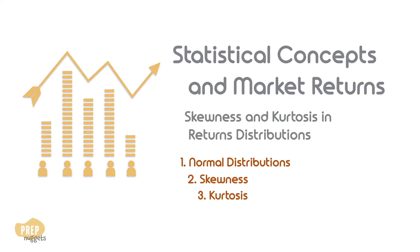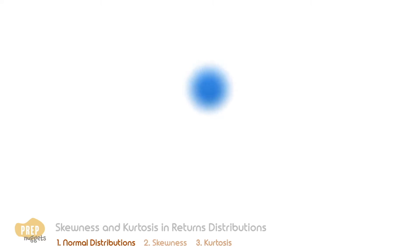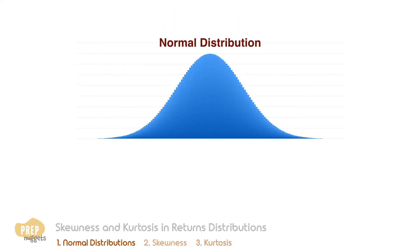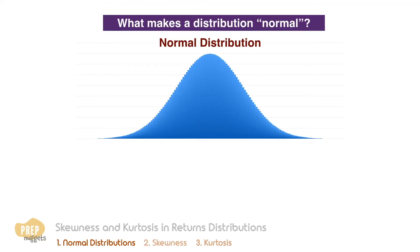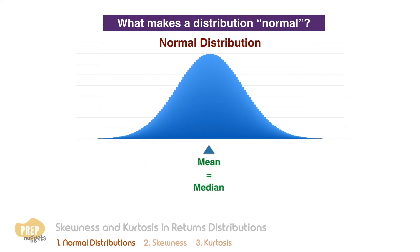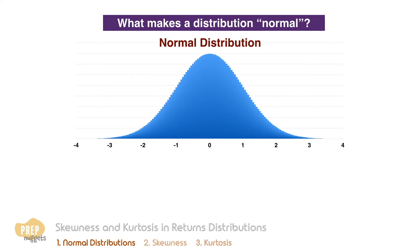Let's begin. We're familiar with the normal distribution — what makes a distribution normal? A normal distribution has the following characteristics: firstly, the mean and median are equal; secondly, the distribution can be completely described by its mean and variance; and third, around 68 percent of observations lie between plus or minus one standard deviation from the mean.